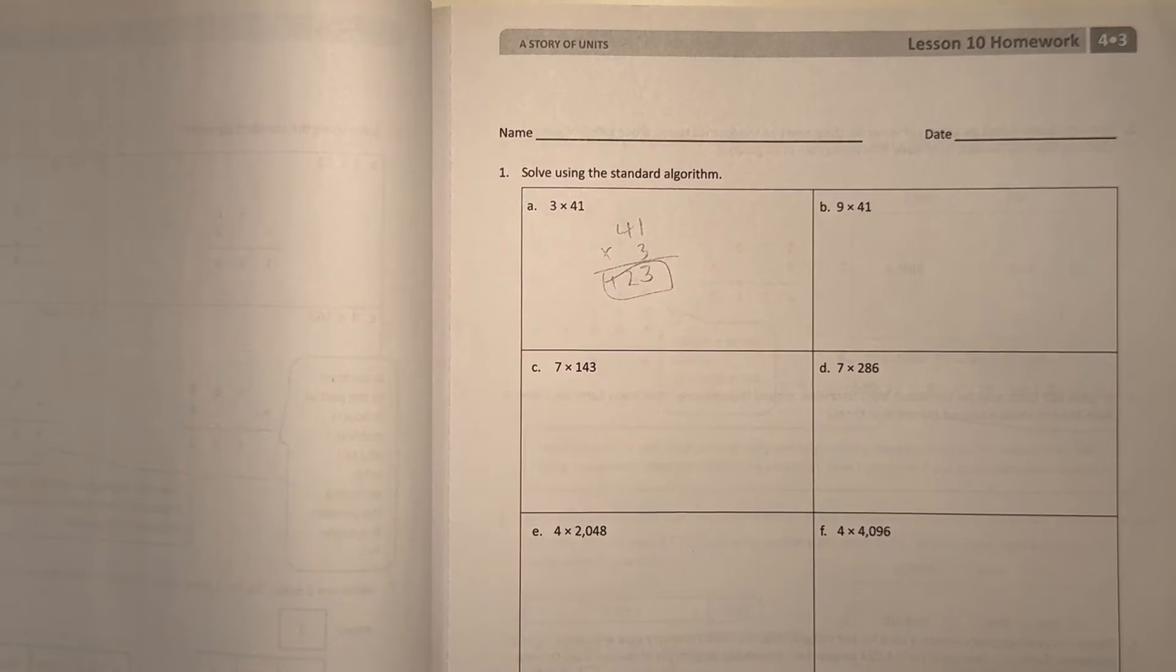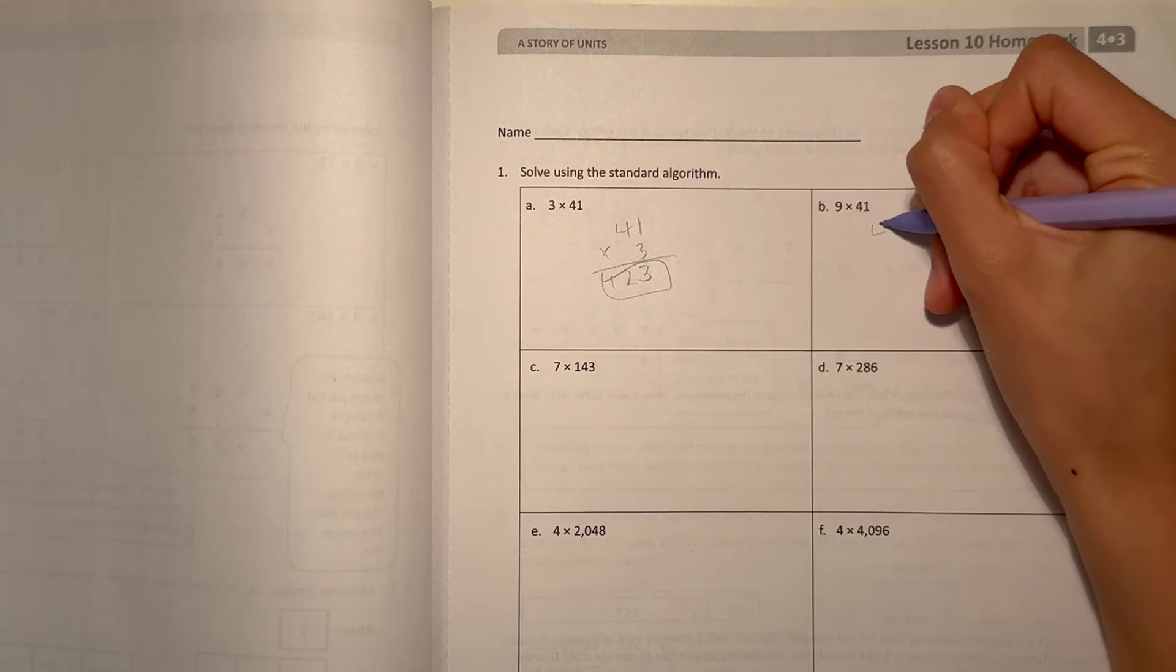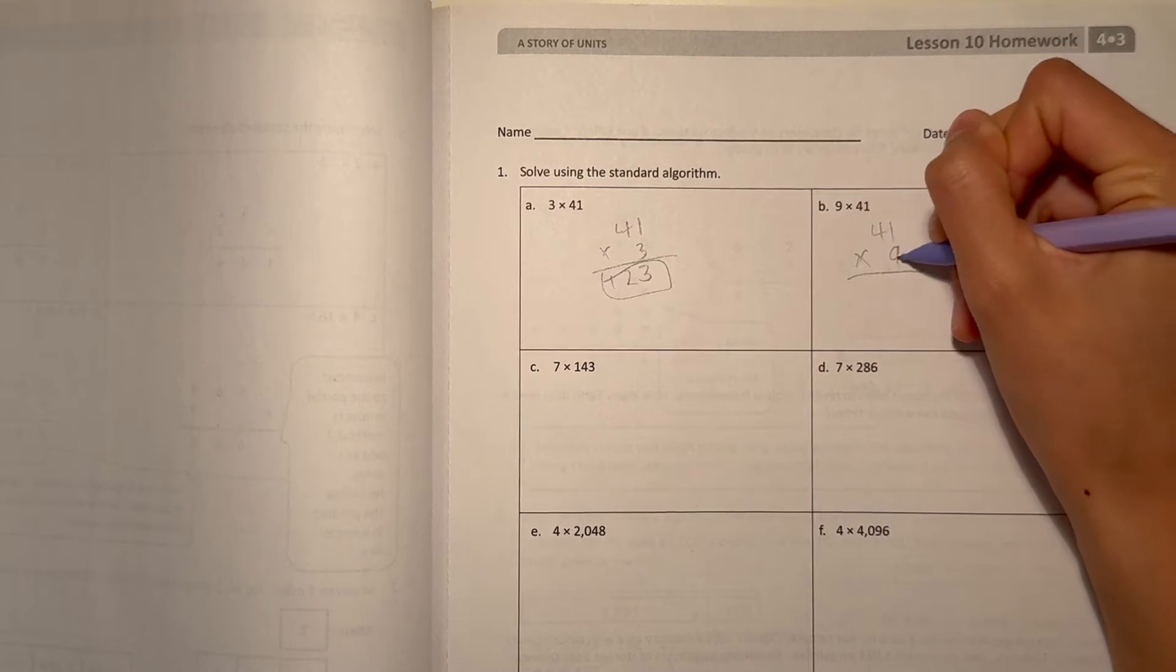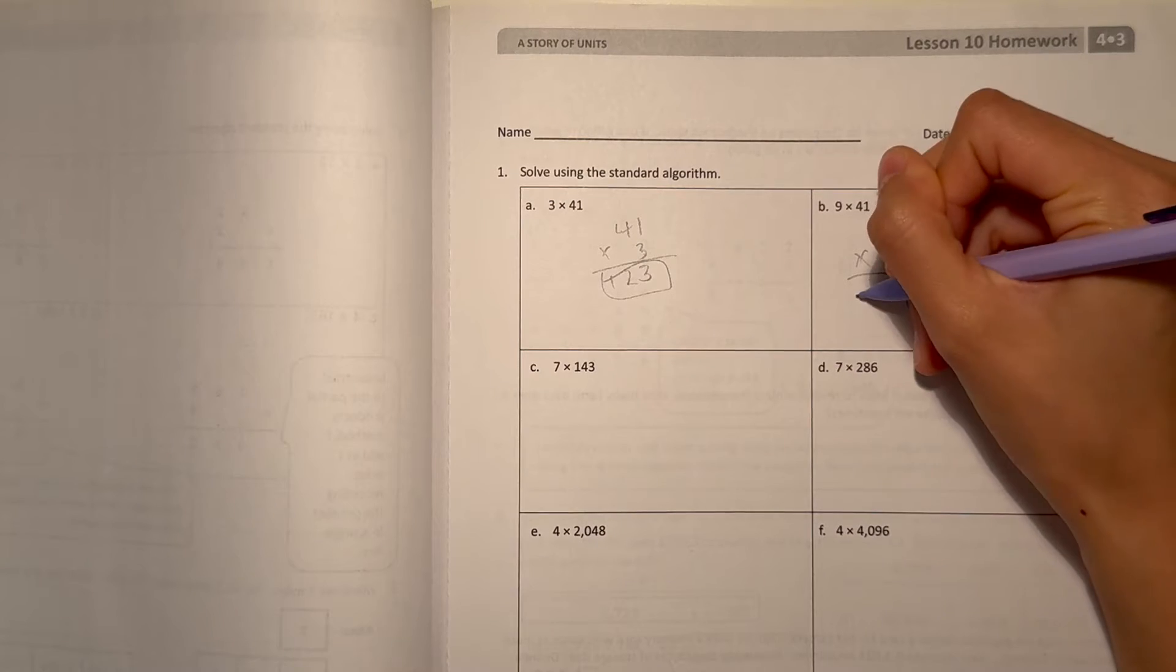Now for B, 9 times 41, could rewrite it as 41 times 9 because the big one's on top. 1 times 9 is 9, and 4 times 9 is 36.